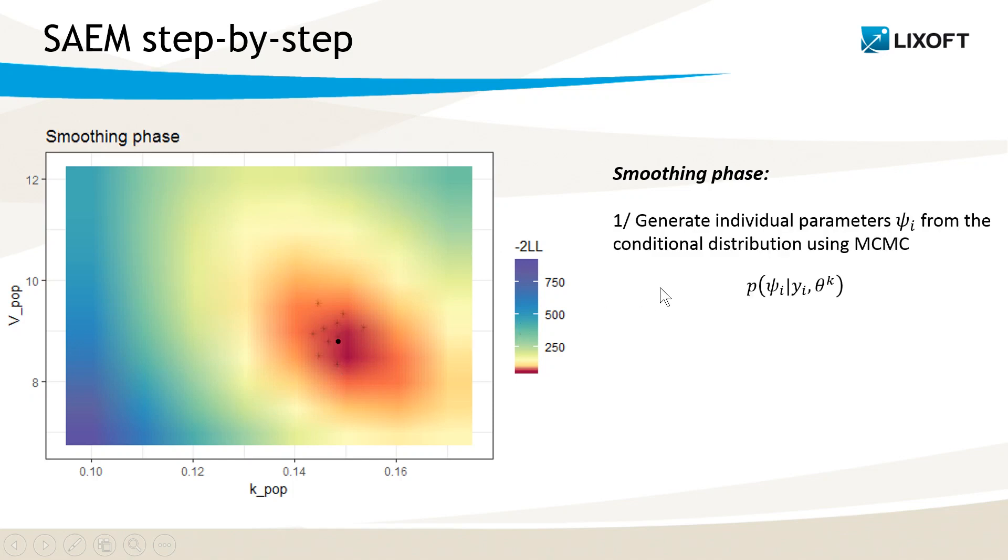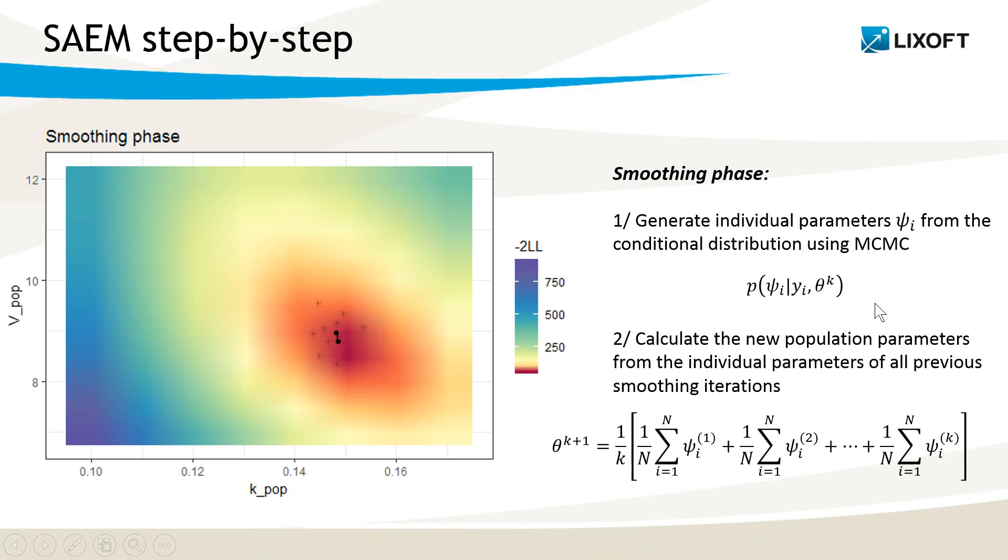The first step is the same as before. I generate individual parameters using Markov Chain Monte Carlo. In the second step, however, instead of averaging the values of only the last iteration, I average the values of all previous iterations of the smoothing phase.